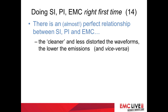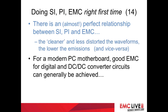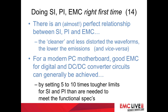Tools are getting better all the time, and EMC competence can be used to specify filters and shielding. There's an almost perfect relationship between SI, PI, and EMC. The cleaner and less distorted the waveforms for signals and power, the lower the emissions are, and vice versa. So for a modern PC motherboard, good EMC for digital and DC converter circuits can generally be achieved simply by setting five to ten times tougher limits for SI and PI than are needed to meet the functional specs.